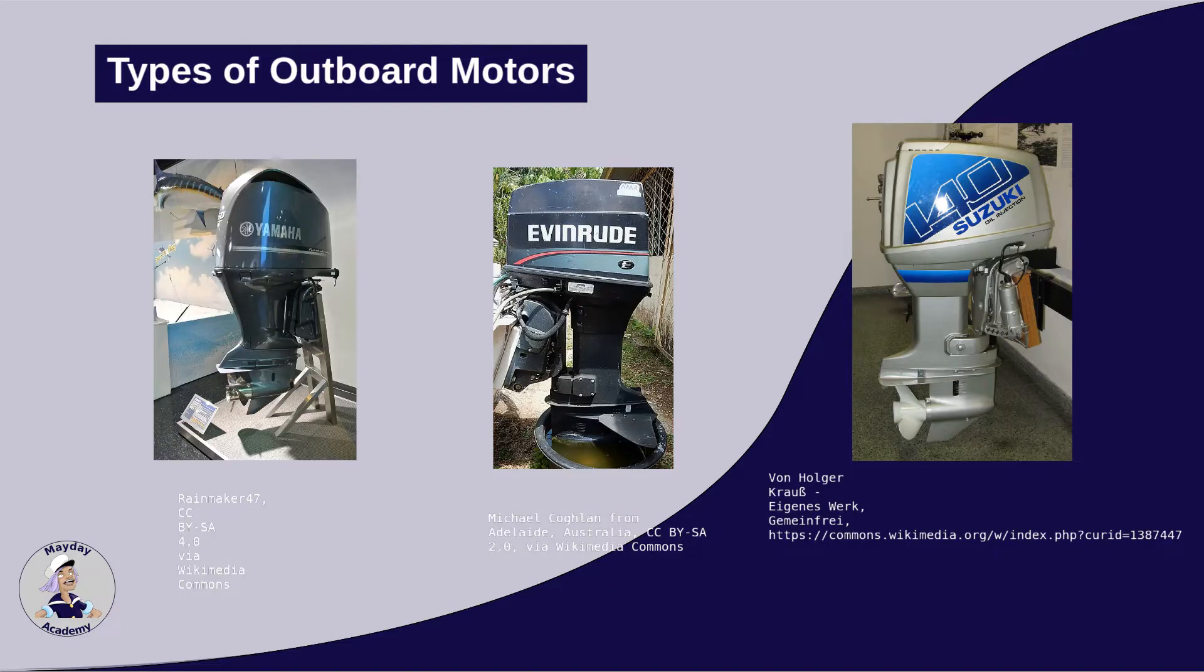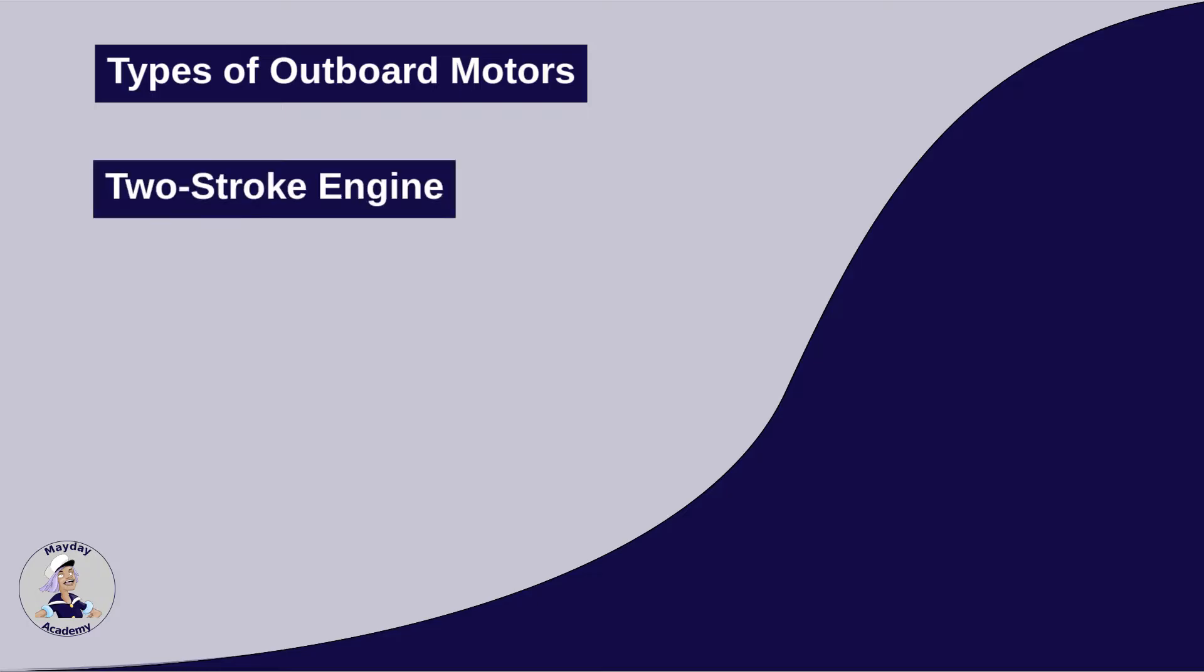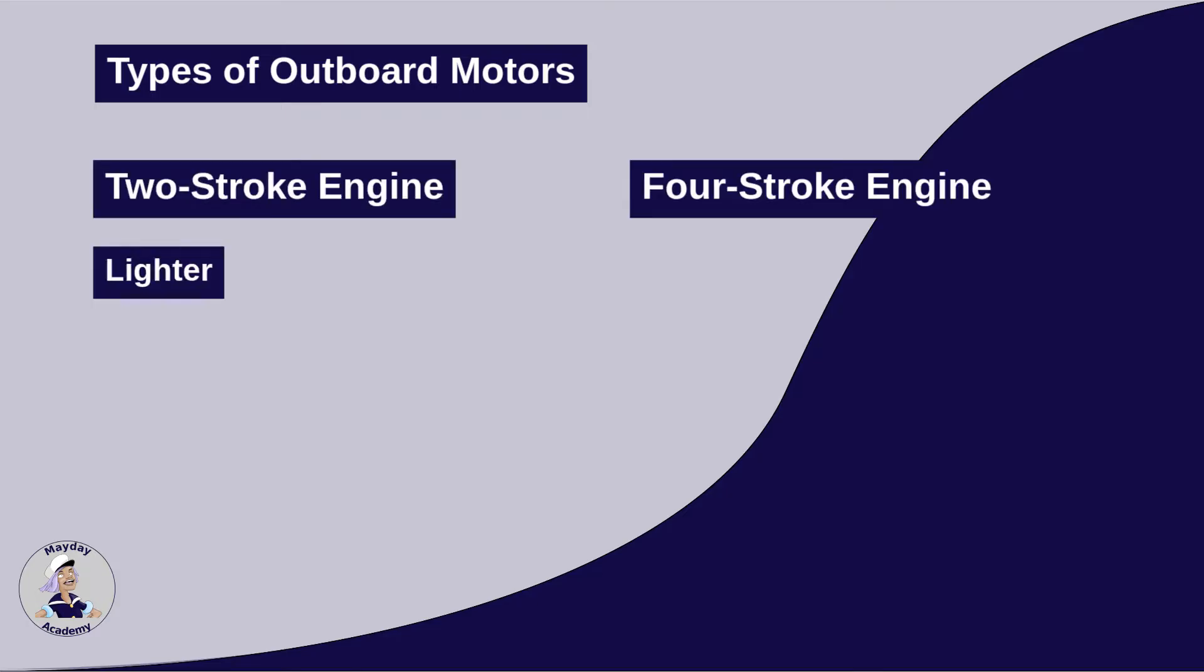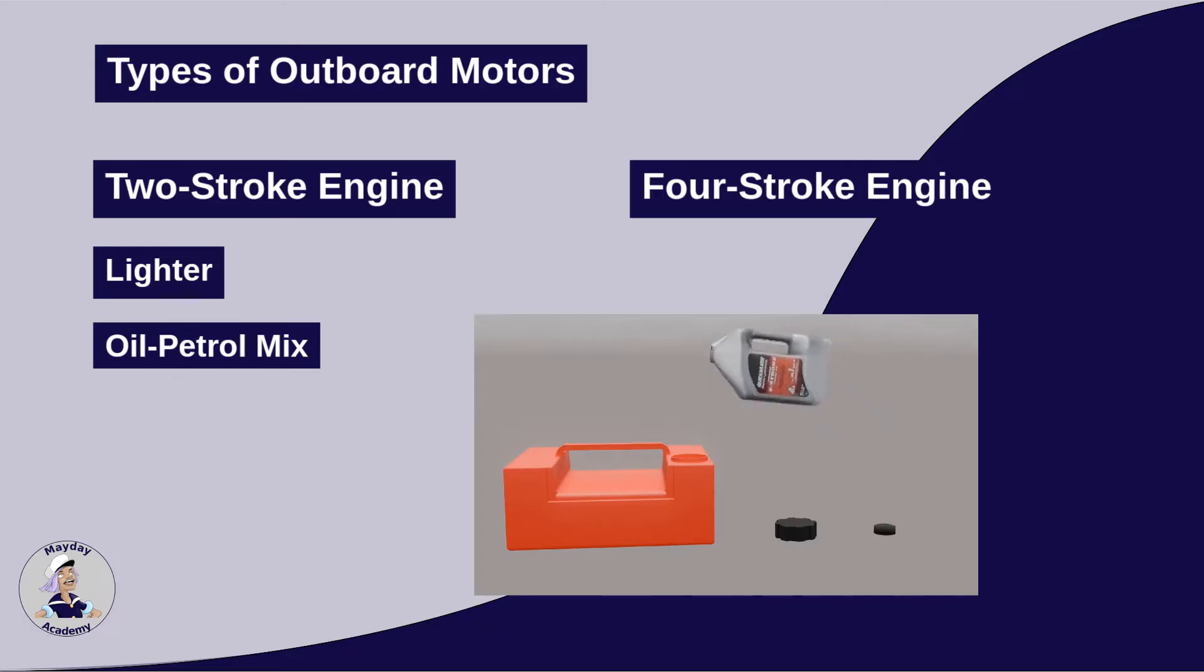Firstly, there is a fundamental difference between two-stroke and four-stroke engines. Two-stroke engines are typically lighter, making them ideal for smaller boats and specific applications. However, they require an oil-petrol mixture, leading to higher emissions.